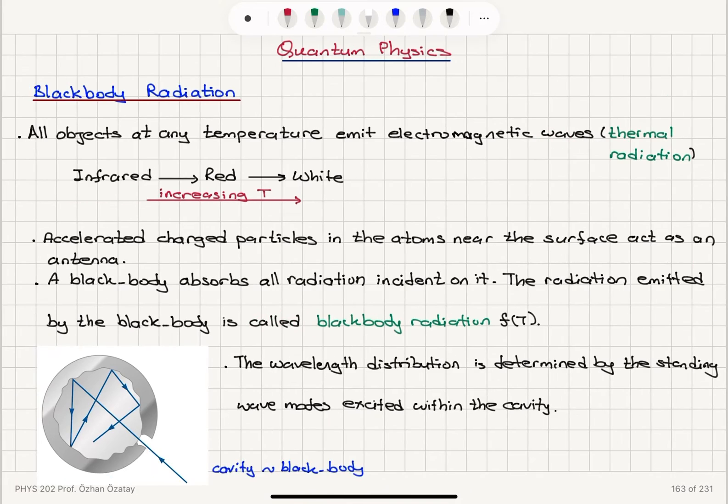So to summarize, we talked about black-body radiation. All objects emit electromagnetic waves due to finite temperature, that is accelerated charged particles at the surface acting as an antenna producing this radiation. And increasing temperature shifts the wavelength distribution to shorter wavelengths, higher frequencies.